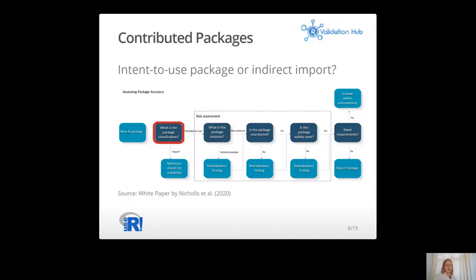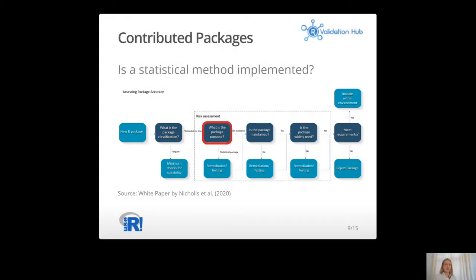Let me walk through the suggested framework. In the first step, we qualify whether a package is intended for direct use — meaning the user is directly loading it into the R session — or whether it is a dependency, an indirect import through other packages. If it is a dependency, minimum checks for suitability may be enough. If it is intended for use, we further process the package in a risk assessment, determining whether we want to use a statistical method implemented — including algorithms — or if it is non-statistical, such as data manipulation, application interface, communication, or plotting.